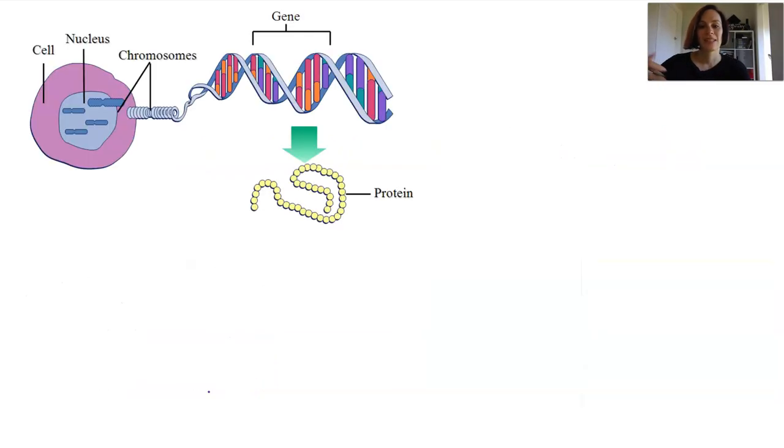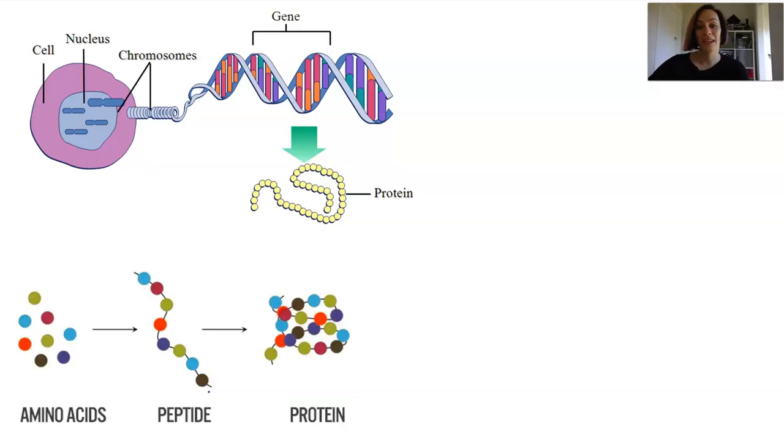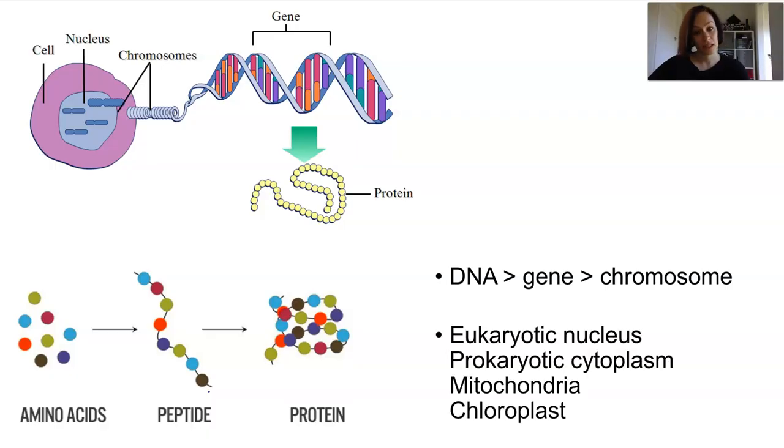DNA carries information in the form of genes and genes are sections of DNA which can provide instructions to code for the order of amino acids in a polypeptide chain. This is one of our other macromolecules which are part of proteins. So DNA controls the cell's activity with protein synthesis and it can self-replicate when the cell needs to divide and multiply. DNA appears in the nucleus of eukaryotes within the cytoplasm of prokaryotes but it's also interestingly in mitochondria and chloroplasts.